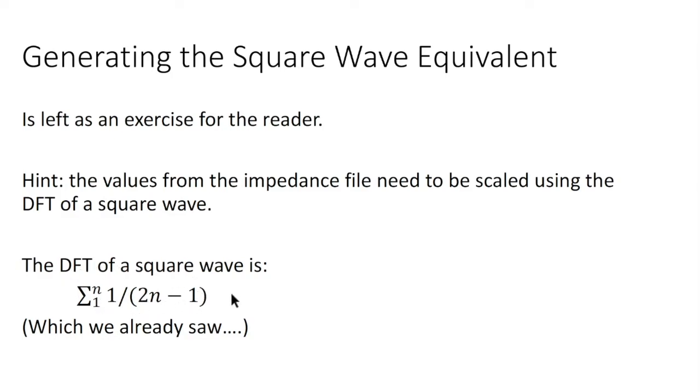This, remember where we saw one, zero, one-third, zero, one-fifth, one-zero, one-seventh, ad nauseam. That is in fact the discrete Fourier transform of a square wave. We've already seen it. This is just for the mathematically inclined. It's not complicated, but it doesn't really lend much to this paper.